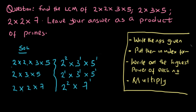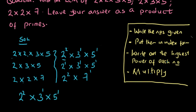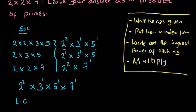The next step is to write out the highest power of each number present and multiply. The highest power of 2 is 2 raised to power 2. The highest power of 3 is 3 raised to power 1, which is just 3. The highest power of 5 is 5 raised to power 1, which is just 5. The highest power of 7 is 7 raised to power 1, which is just 7. So the LCM equals 2 raised to power 2 × 3 × 5 × 7. And this is our answer.